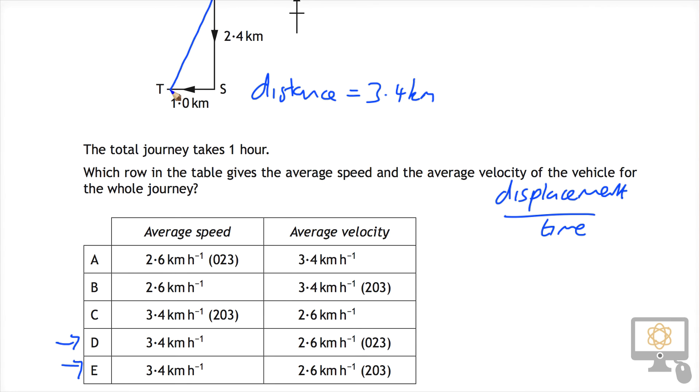The displacement is this vector here which is the resultant of 2.4 and 1 kilometre, and that will be our displacement vector. Now if we look at the table we know it's got to be D or E. So really we're not interested in calculating the value.